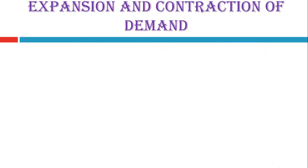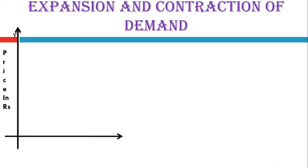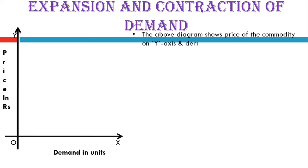Now let us see the demand curve in detail — expansion and contraction of demand. I am drawing the Y-axis, where price will be denoted in rupees. Another axis — the X-axis — will record demand in units, and the origin will be O. For your explanation, write: the above diagram shows price of the commodity on the Y-axis and demand of the commodity on the X-axis.